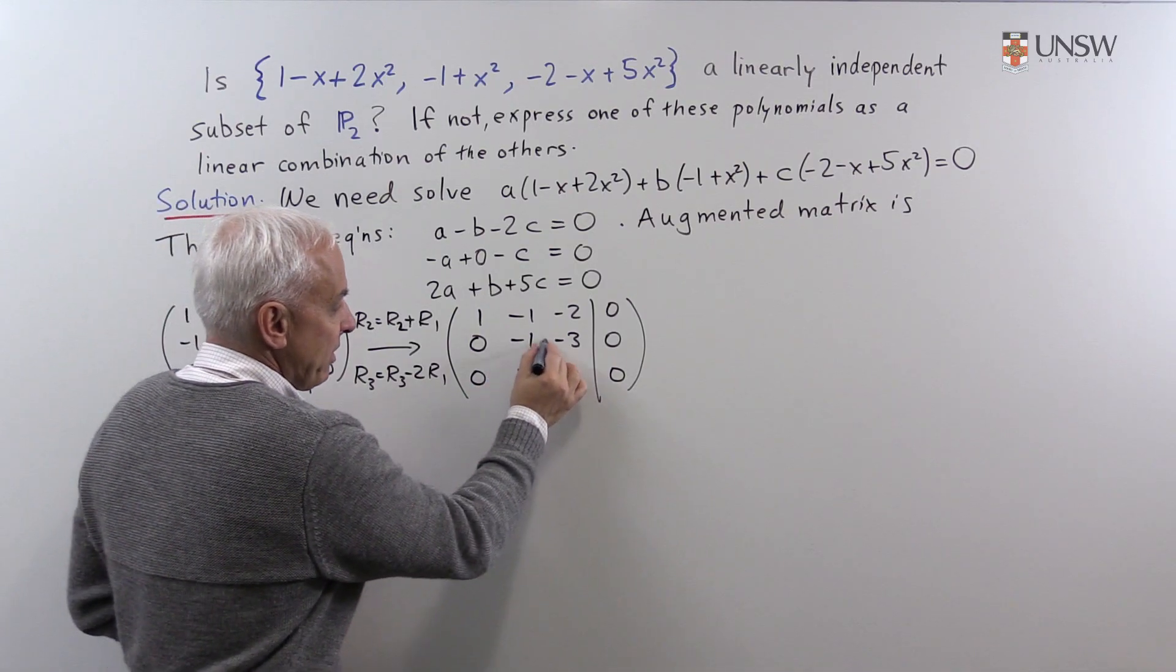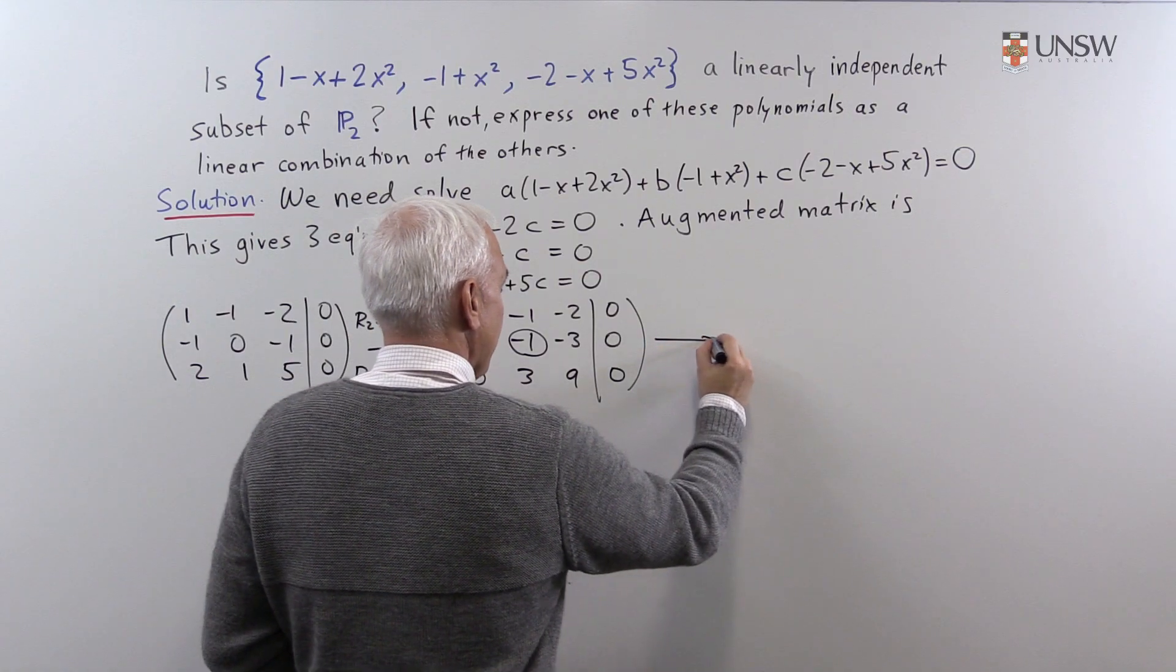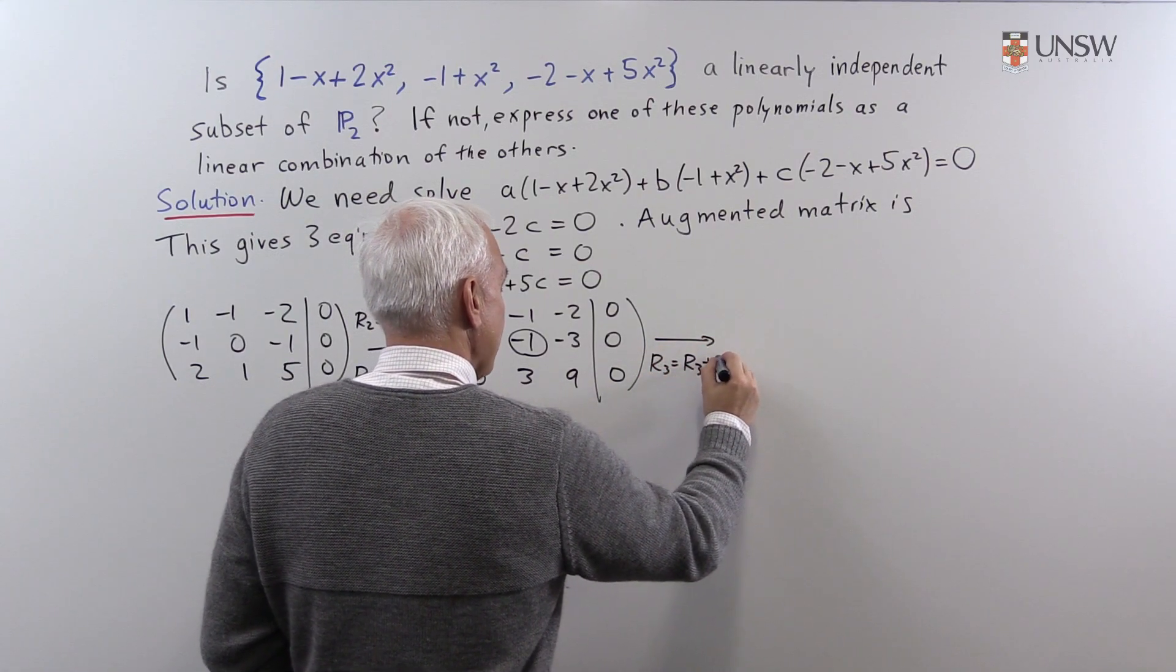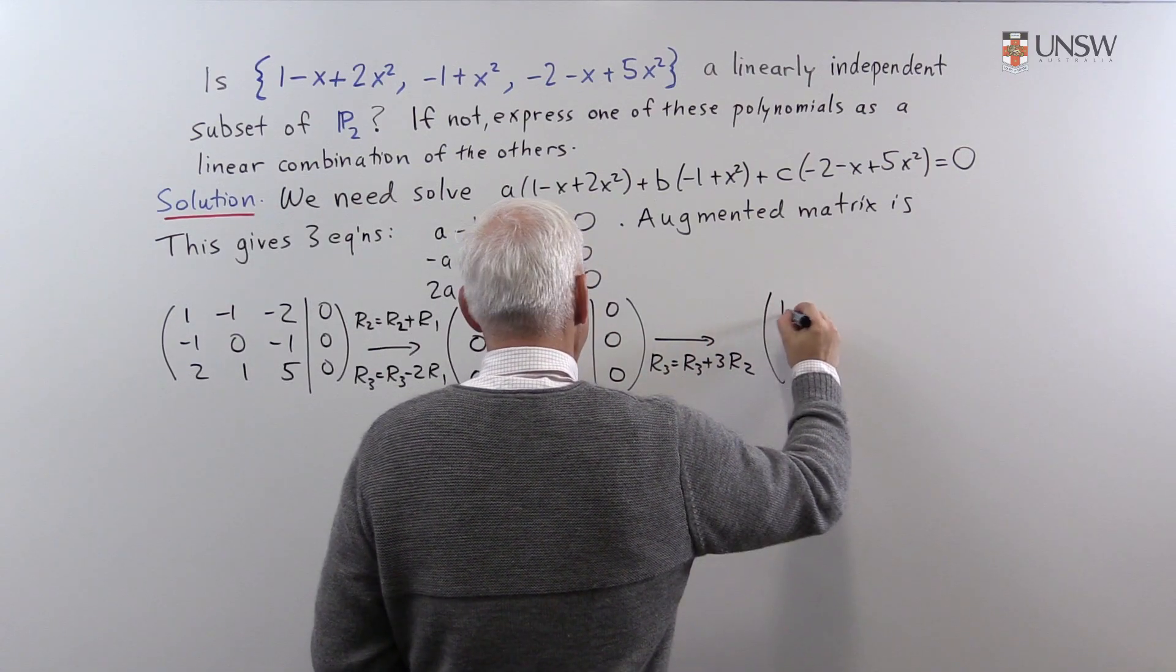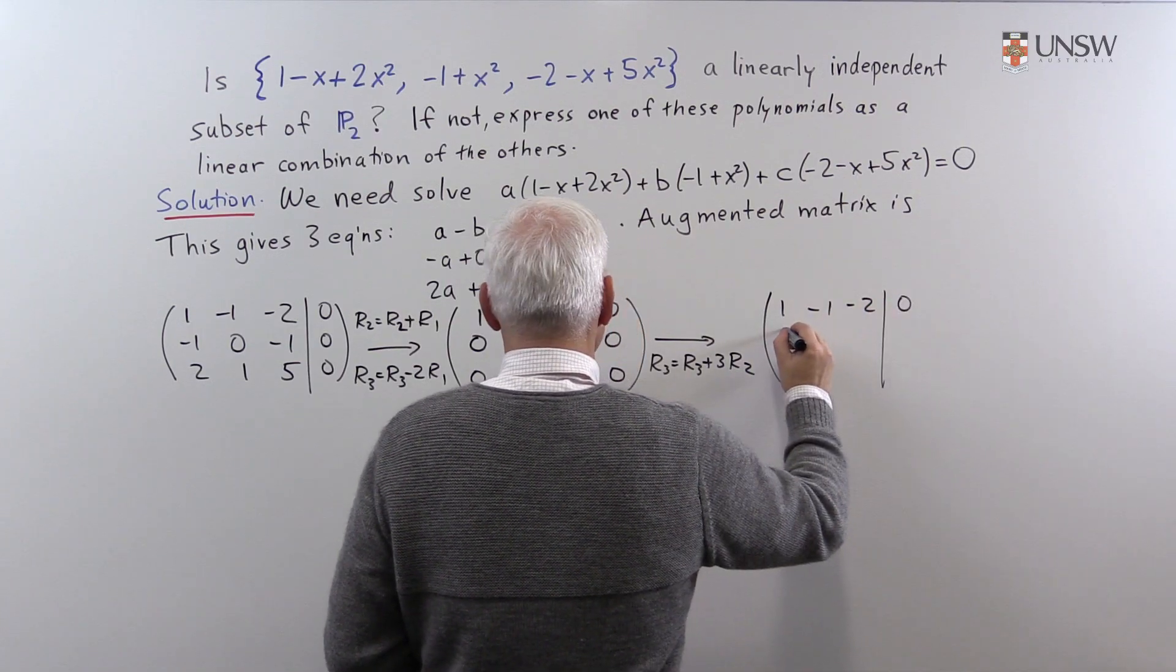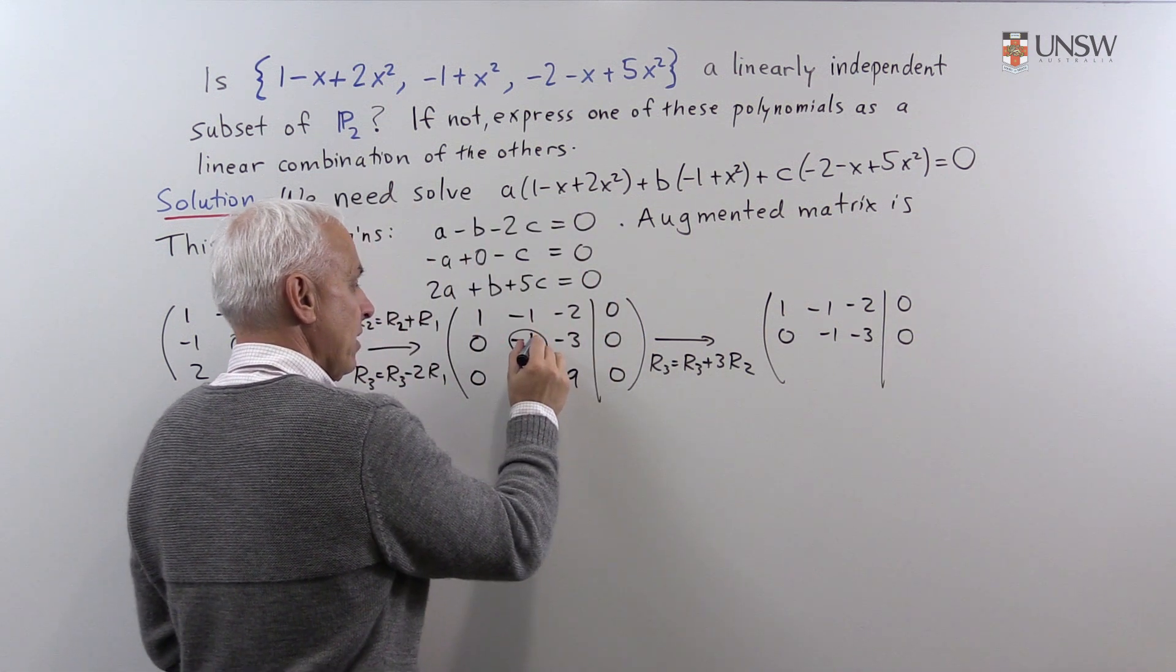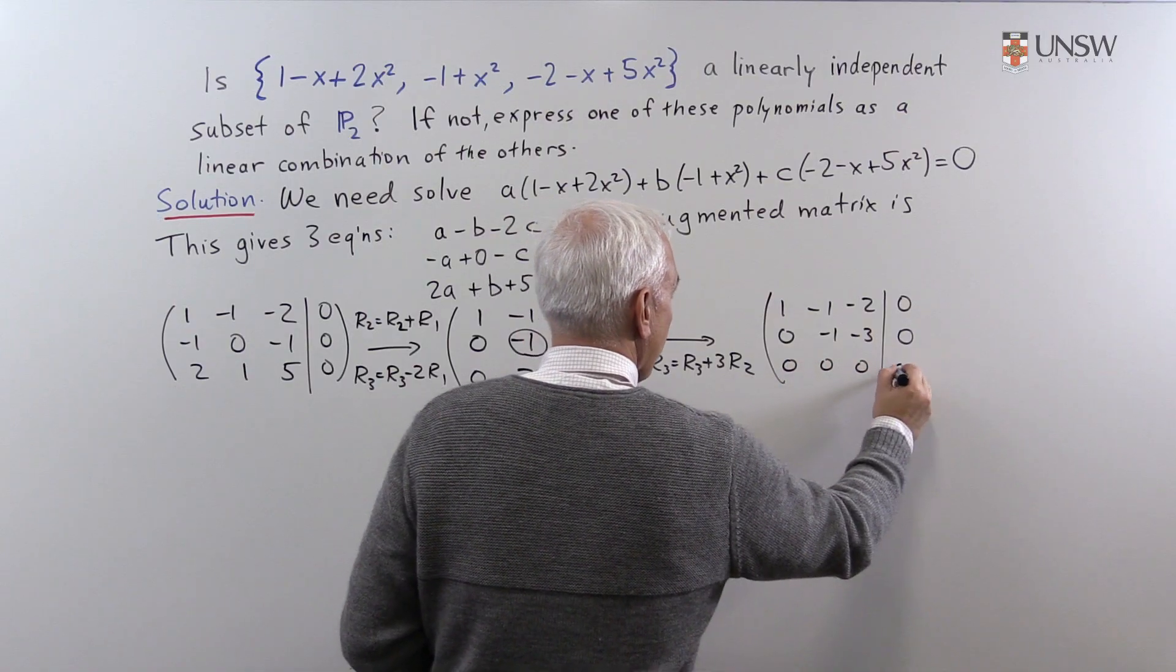And now we're going to use this as a pivot, get rid of the 3 below it. So, we'll replace row 3 with row 3 plus 3 times row 2. Giving us 1, -1, -2, 0, -1, -3, 0. And this plus 3 times the previous row gives us a row of 0's.